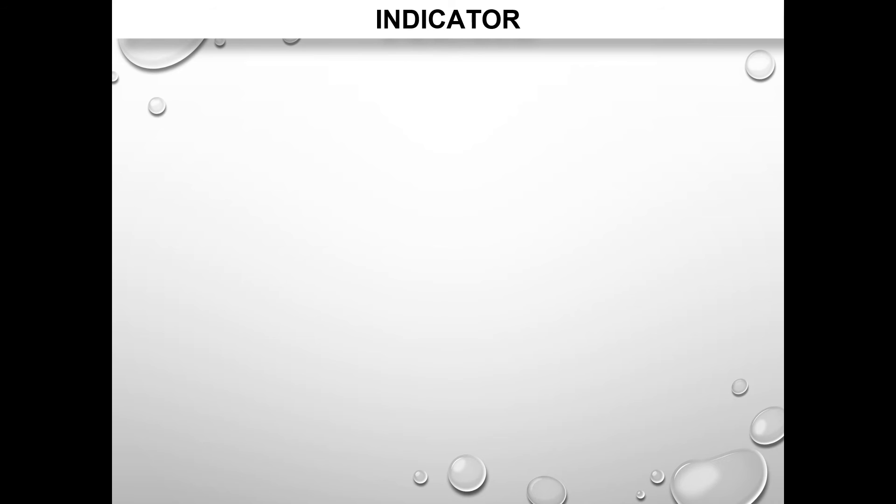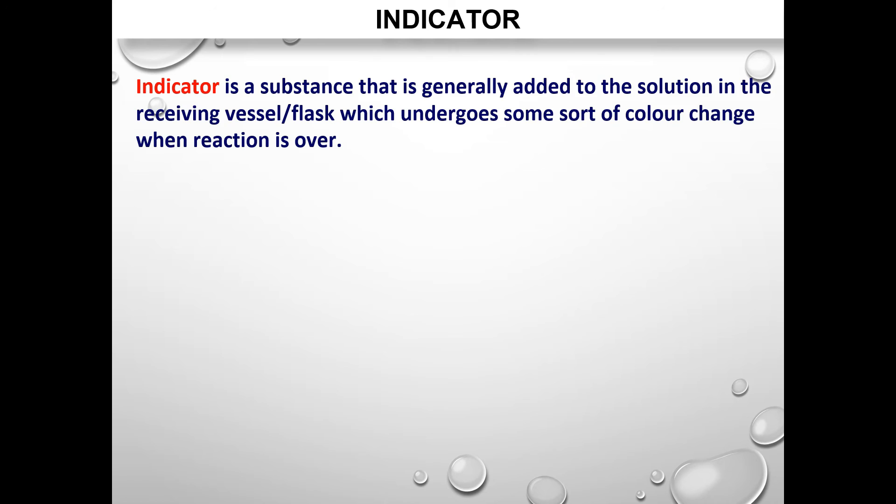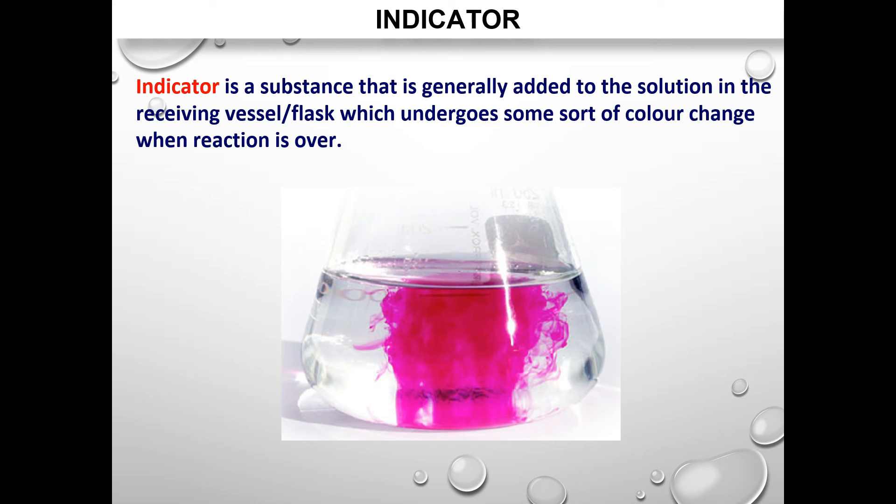As you know, an indicator is needed in a titration. An indicator is a substance that is generally added to the solution in the receiving flask which undergoes some sort of color change when the reaction is over.